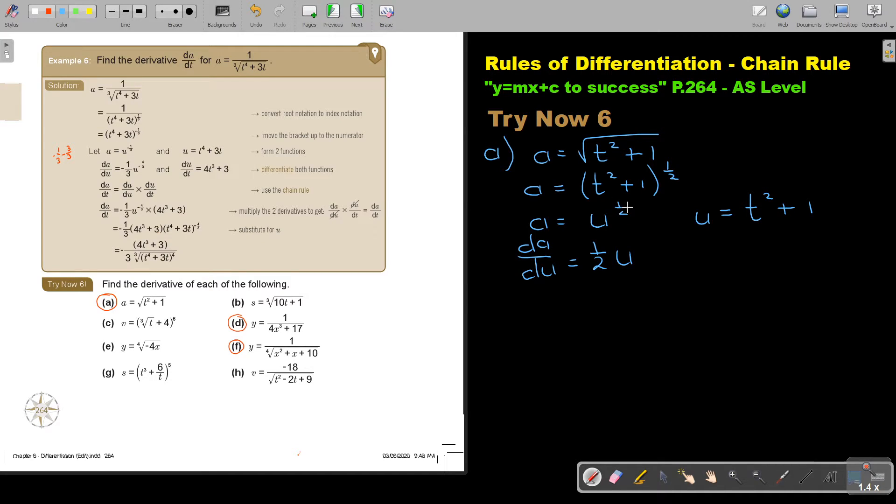This is going to be a half. And U, don't forget, it's a half minus 1 or minus 2 over 2, so it's negative a half. This is going to be dU by dT and it's going to be 2T. Then I'm going to multiply. I can show it but it's not necessary. Because the U's will cancel out. So it's dA by dT and I'm just bringing it back.